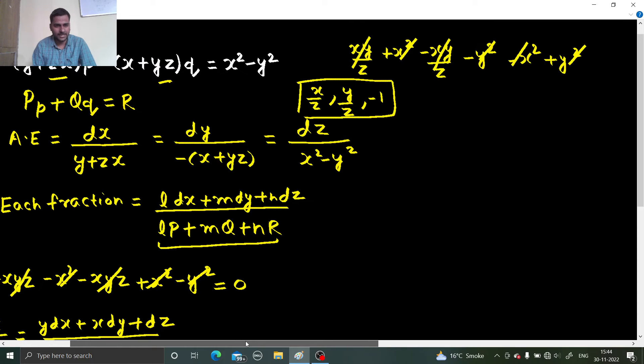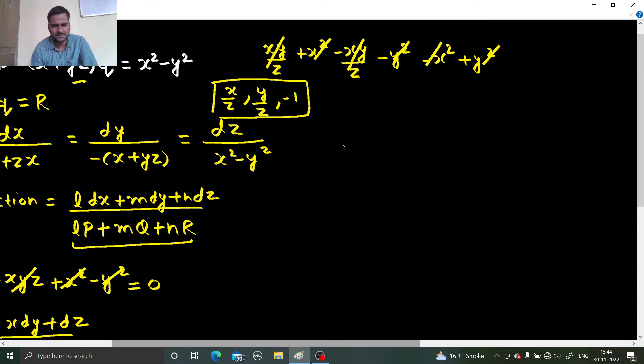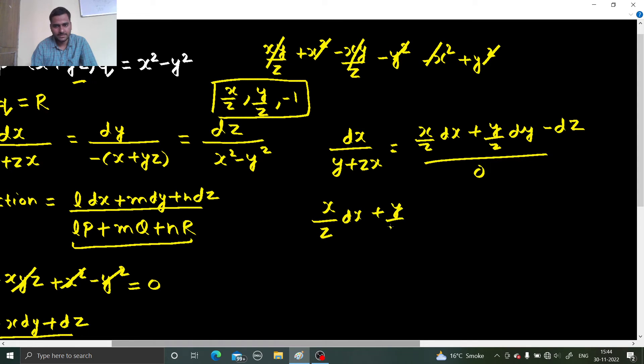So each fraction, so take again dx divided by y plus zx, looking simple, equals to x by z dx plus y by z dy minus dz divided by 0. x by z dx plus y by z dy minus dz equals to 0. What we can do is multiply throughout by z, so x dx plus y dy minus z dz equals to 0.